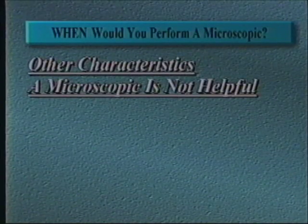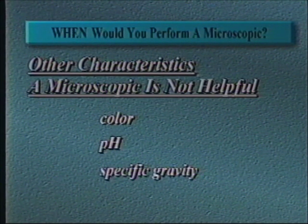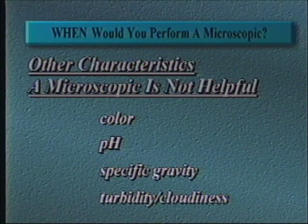Other macroscopic characteristics such as color, pH, and specific gravity are not used in most screening protocols. You gain nothing by looking at urine merely because the specific gravity is high or low. The clarity or turbidity of the urine is another issue. Many people perform microscopics on urines with negative chemical screens merely because they're turbid or cloudy. We think you need to evaluate this in your institution for your patient population. In our experience, if the only abnormality is a cloudy urine, the probability of finding clinically significant elements in the microscopic examination is minimal.